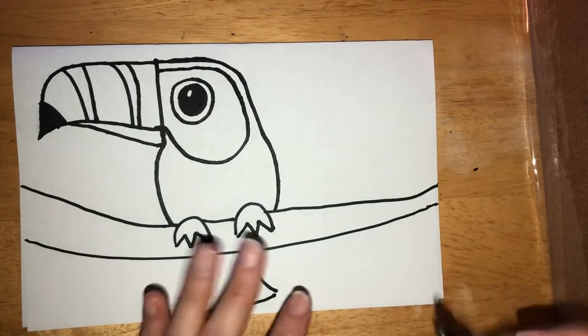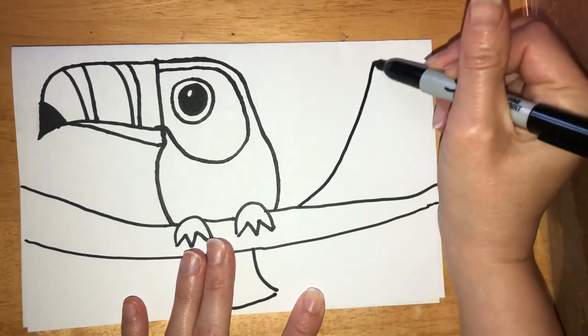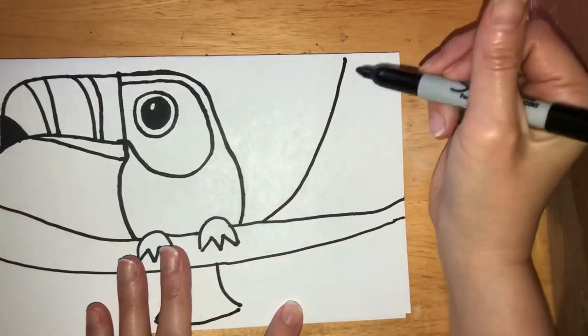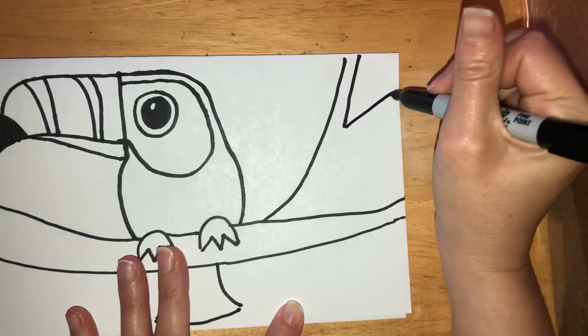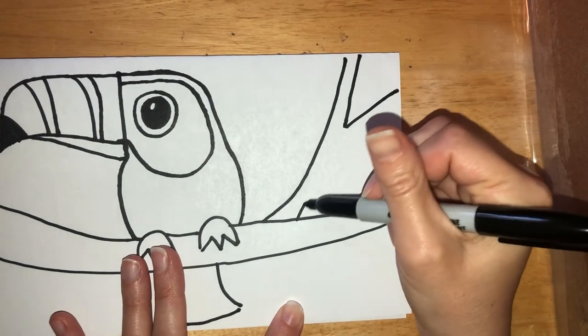All right, now that our toucan's done, we want to work on that tree branch. So from here I'm going to come up, curve not quite to the very corner of the paper, then I'm going to make a V. This is always a good way that we can draw a tree branch—you make a V, come back to the bottom.